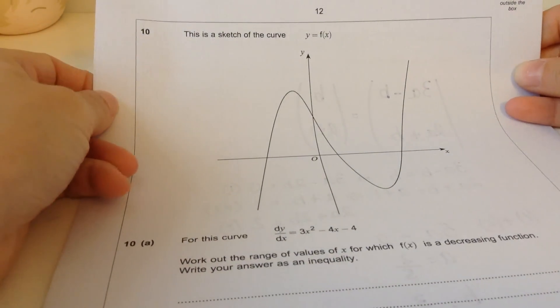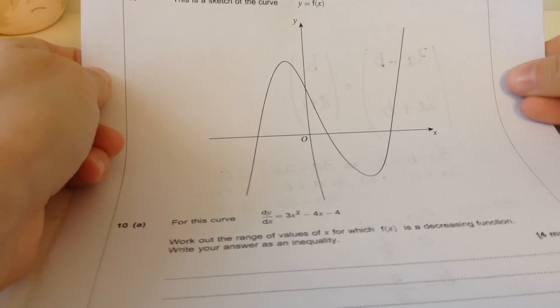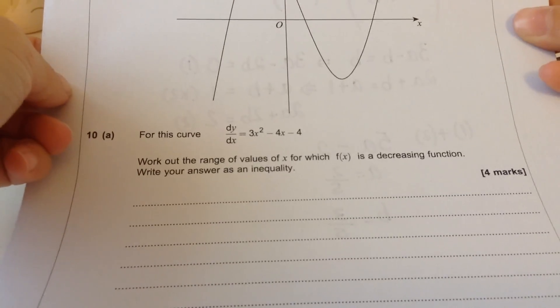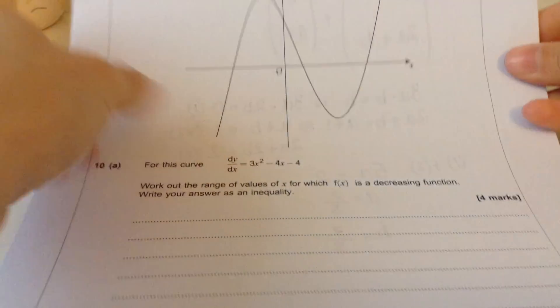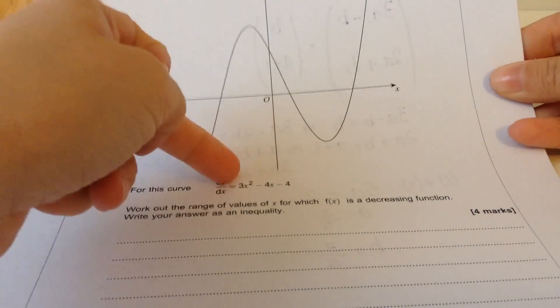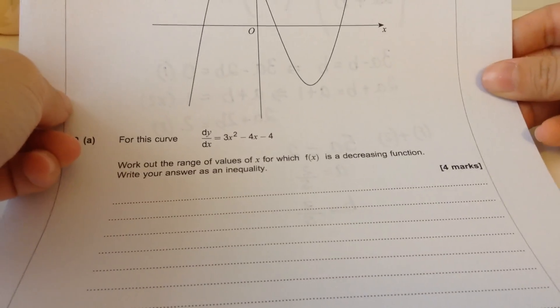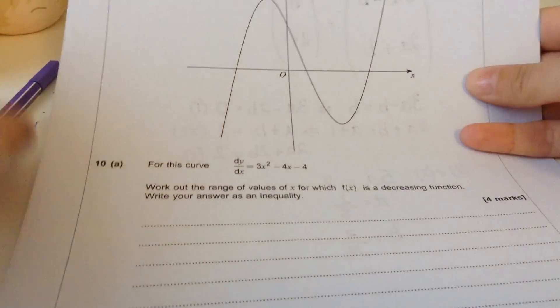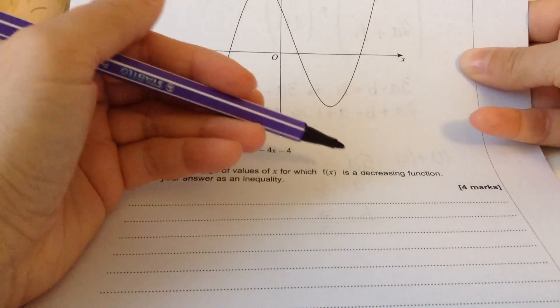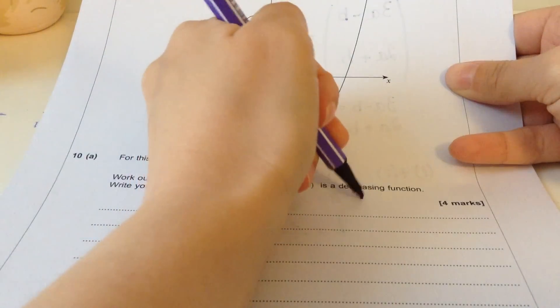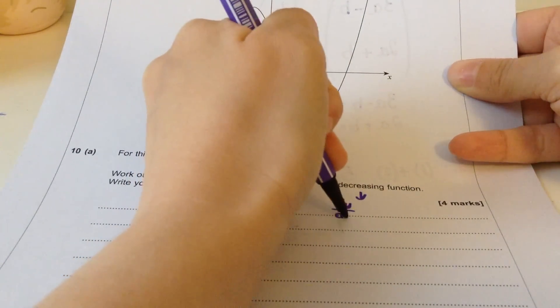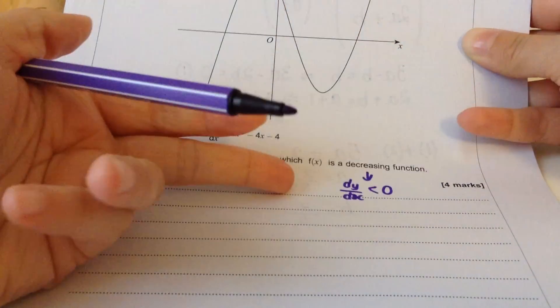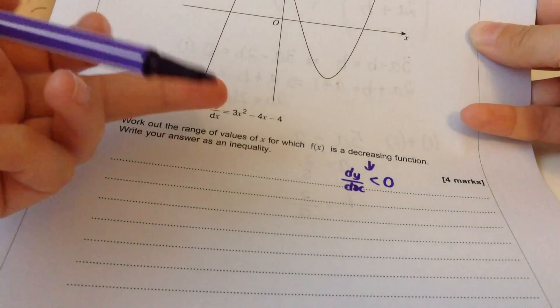Number 10. This is a sketch of the curve f of x. It looks like a cubic to me. For this curve, dy by dx is this quadratic. So this will be a cubic then if it differentiates to make a quadratic. Work out the range of values of x for which f of x is a decreasing function.